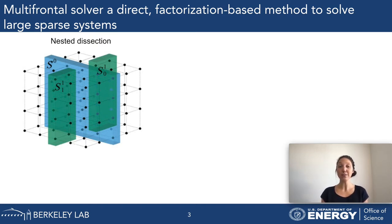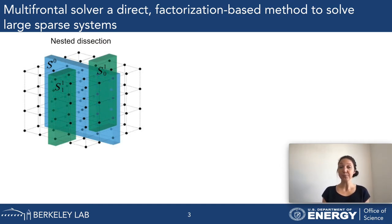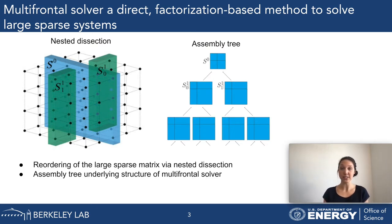At first, the graph is subdivided into two smaller subgraphs using the separator S0, highlighted in blue. From there, we separate again into smaller subgraphs using separators highlighted in green, and then into smaller and smaller subgraphs. We use these separators to construct a so-called assembly tree, seen on the right side.